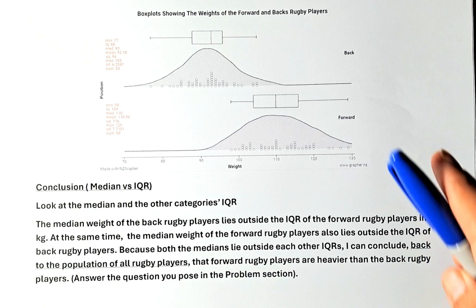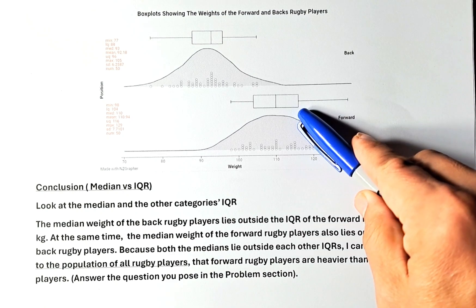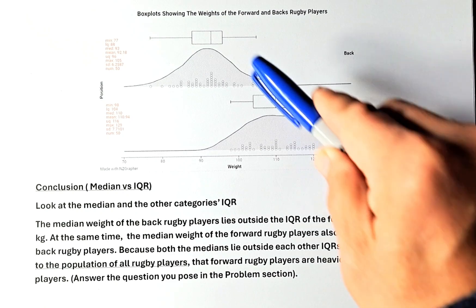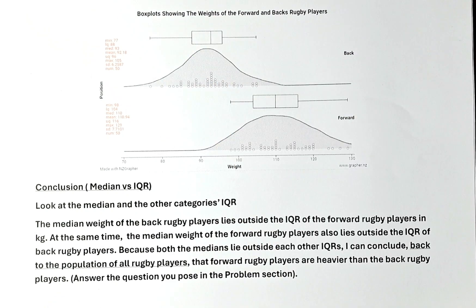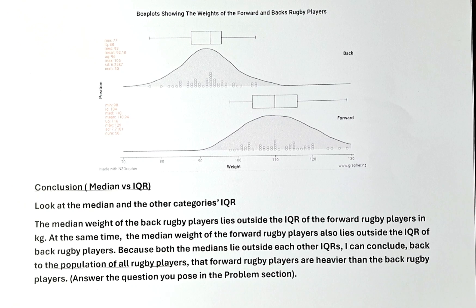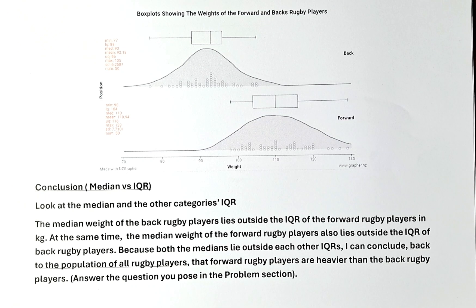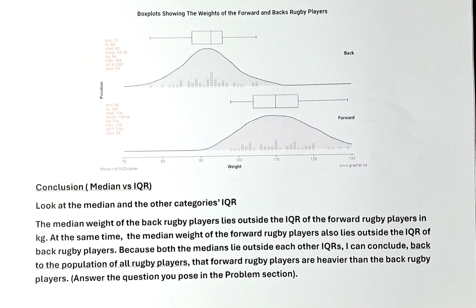Back to the population of all rugby players, the forward rugby players are heavier than the back rugby players. Remember, as long as one or both medians lie outside the IQR of the other category, you can make the claim that one group is bigger or heavier than the other.